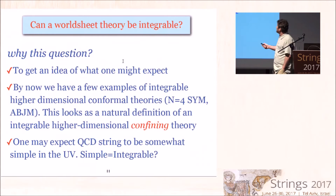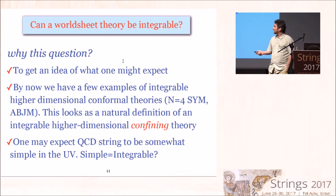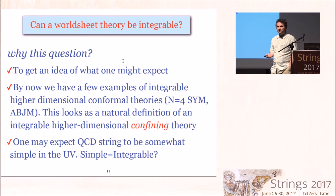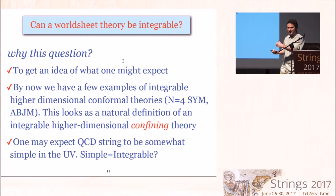The question is: are there examples of confining theories where the worldsheet theory defined above is integrable? Why ask this? First, to get an idea of what one might expect. Whenever you see a two-dimensional theory associated to a four-dimensional theory, it's natural to ask whether it can be integrable. For me, the major motivation was coming from what we heard from Pedro: we know there are examples of conformal high-dimensional theories that are integrable, like N=4 SYM and ABJM. So it's interesting to ask: are there integrable confining theories?